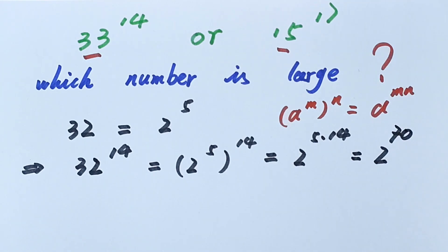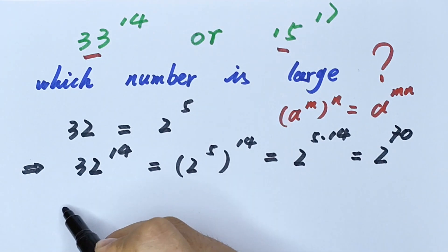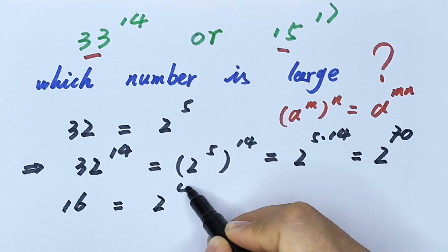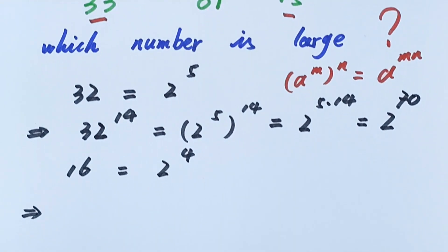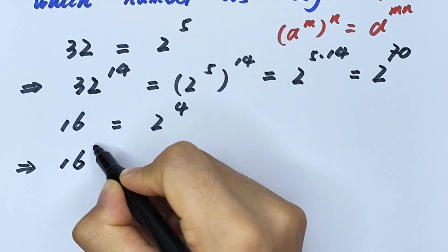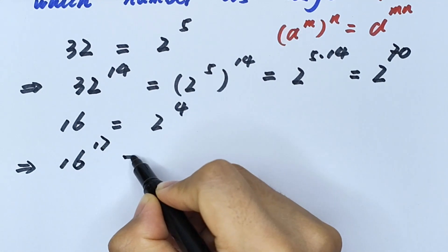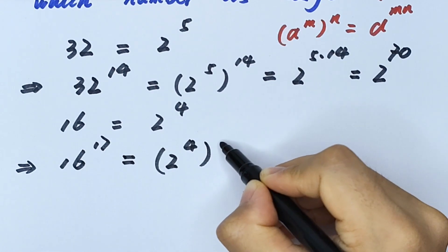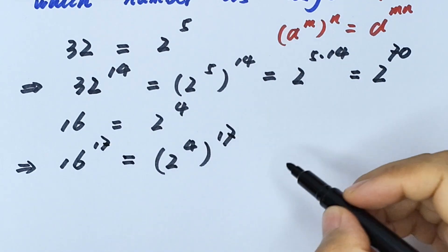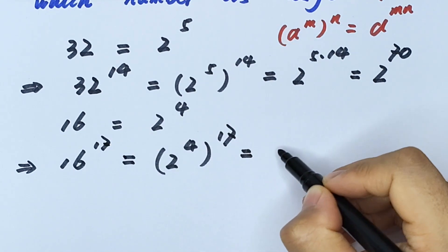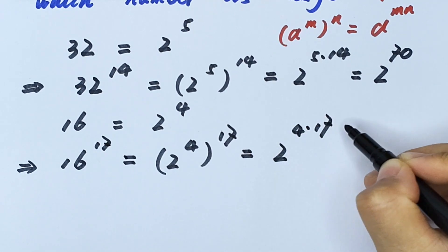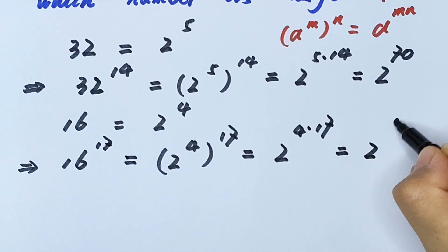On this side, converting 16 to a number with base 2 — 16 is the same as 2 to the power of 4. So 16 to the power of 17 equals 2 to the power of 4, in brackets, to the power of 17, which equals 2 to the power of 4 times 17, equals 2 to the power of 68.